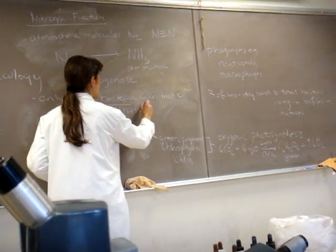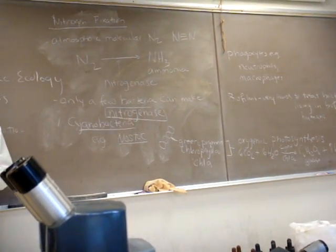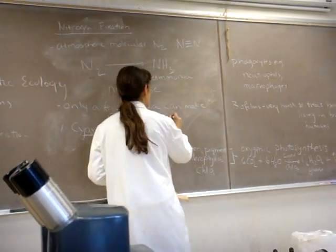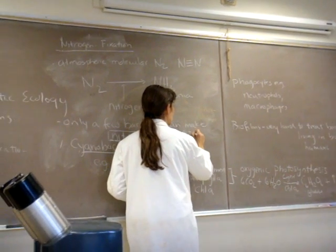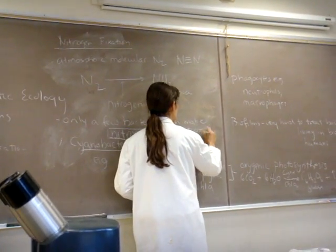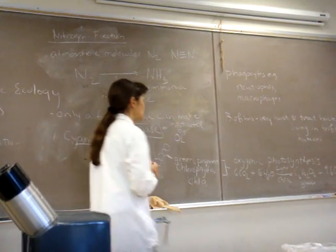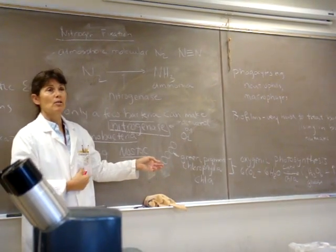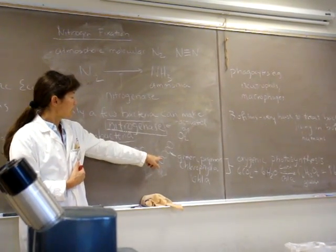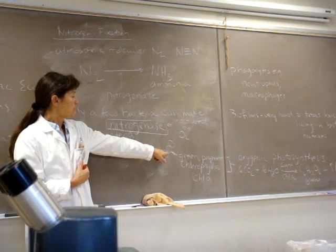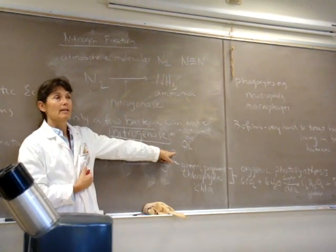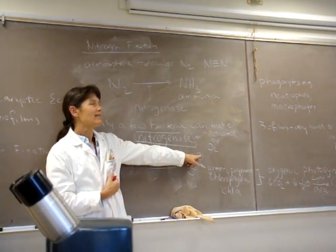And the reason is this enzyme complex, nitrogenase, is inactivated by molecular oxygen. We say it's oxygen sensitive. So it's inactivated. It can't function. It's inactivated by molecular oxygen. So I want to pose a question to you. Do you think it would make sense that Nostoc would have nitrogenase present in these little photosynthetic cells? Do you think it would make sense? And if you say no, why do you think it wouldn't make sense?